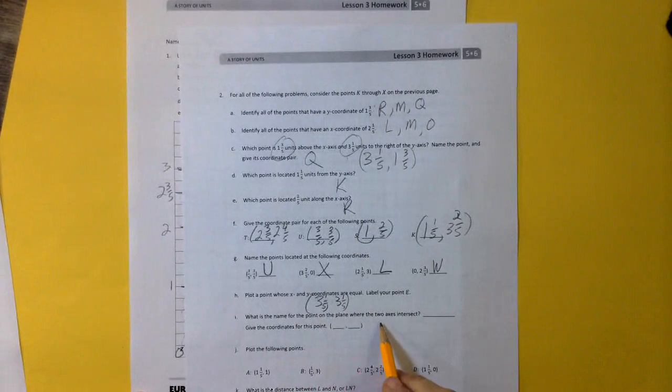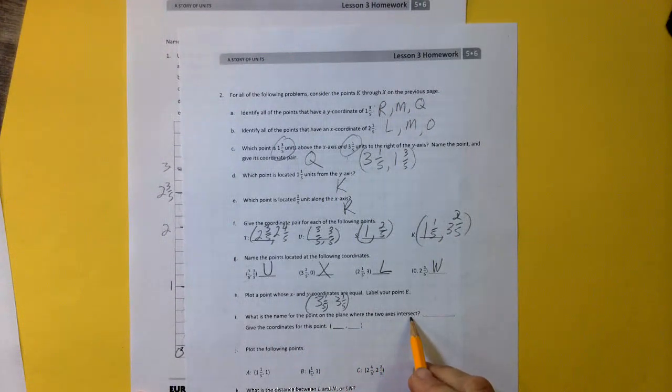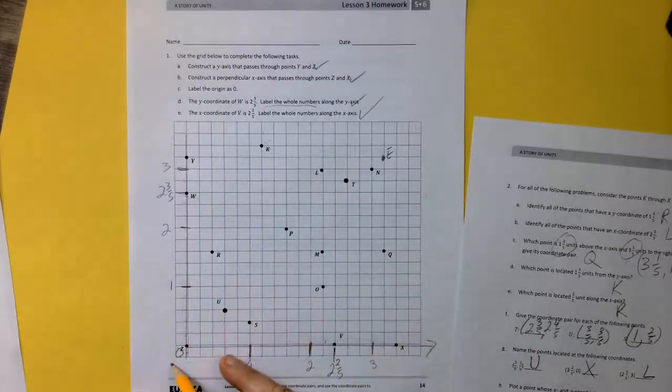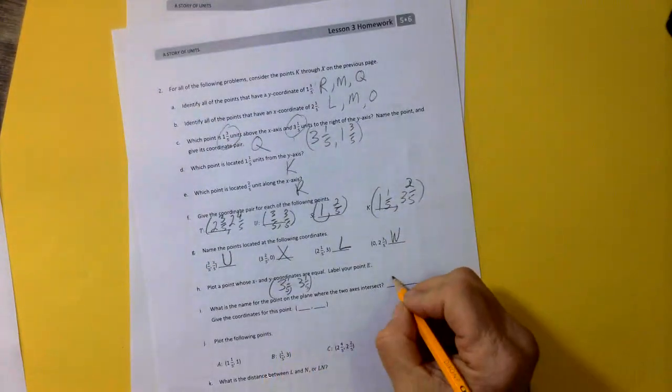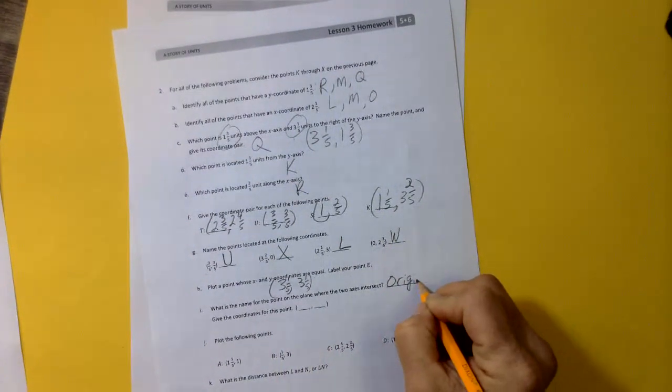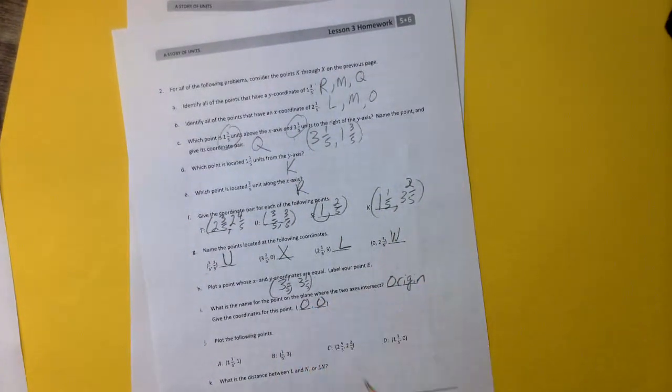What is the name of the point on the plane where the two axes intersect? So we know where they intersect. They both intersect here. We call that the origin. And we know that that is 0, 0.